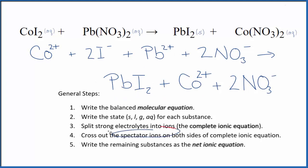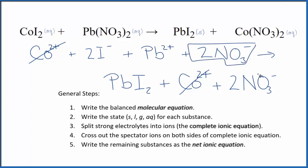Now we can cross out the spectator ions — they're on both sides. We have our reactants, and down here we have the products. I can see there's a cobalt-2 ion in the reactants and in the products — spectator ions — we cross them out. I can also see that there are two nitrate ions in the reactants and the products, so those are spectator ions as well. Cross them out.